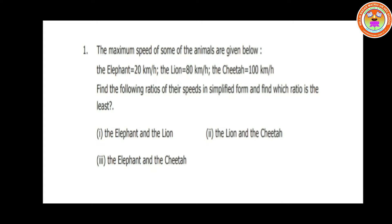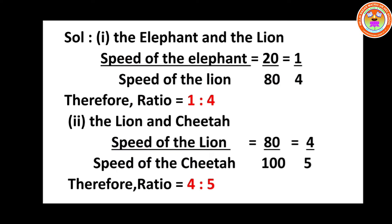Find the following ratios of the speeds in simplified form, and find which ratio is the least. Simplified means you cancel out and bring it to the lowest term, and you have to find which ratio is least. Shall we move on? The first subdivision: ratio between the elephant and the lion — speed of the elephant divided by speed of the lion.